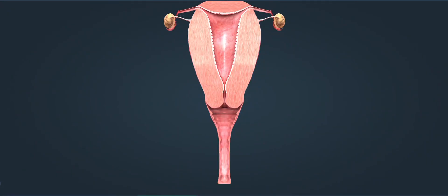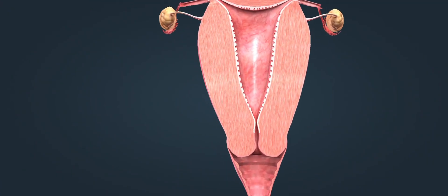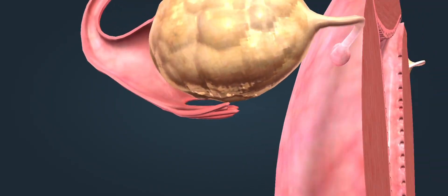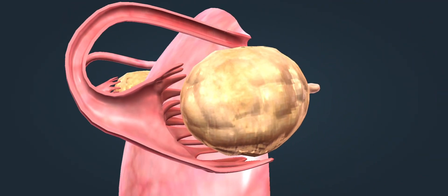The female menstrual cycle represents a series of natural changes that occur cyclically. The cycle starts on the first day of menstrual bleeding. It is 28 days long on average.